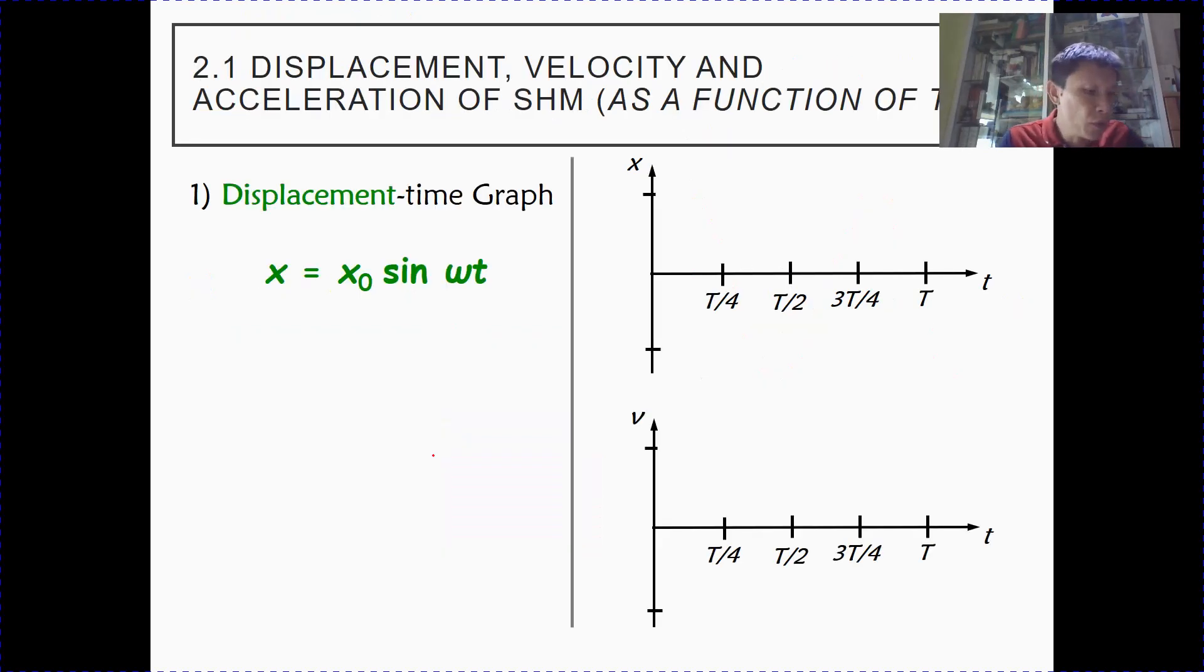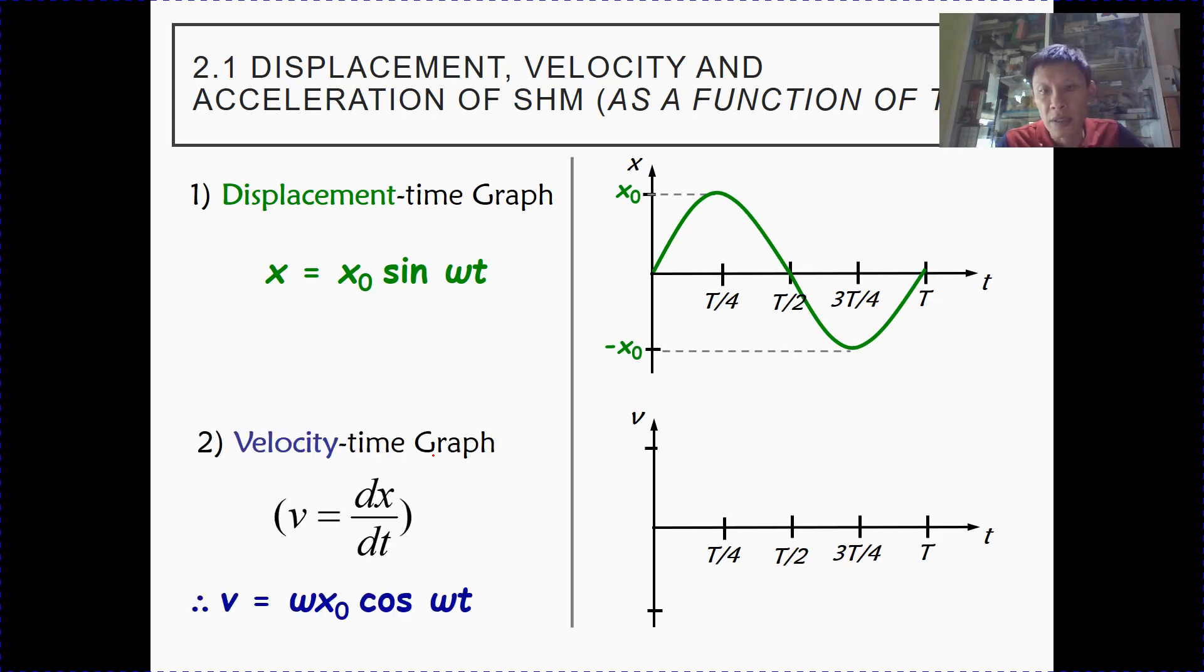So now I refer you to page 7 of your notes. For this section, I'm going to use, instead of using cosine as in my example, I'm going to start off with sine graph. So if my displacement time graph is a sine graph, then the corresponding velocity graph, because you differentiate sine, you get a cosine graph. Note that the amplitude now is omega x0, and the graph is a cosine graph.